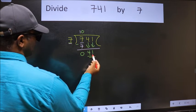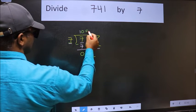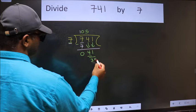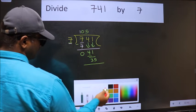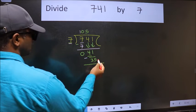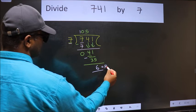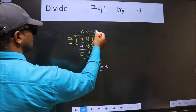Now 41. A number close to 41 in 7 table is 7 fives, 35. Now we should subtract. We get 6. No more numbers to bring it down, so we stop here. This is our remainder and this is our quotient.